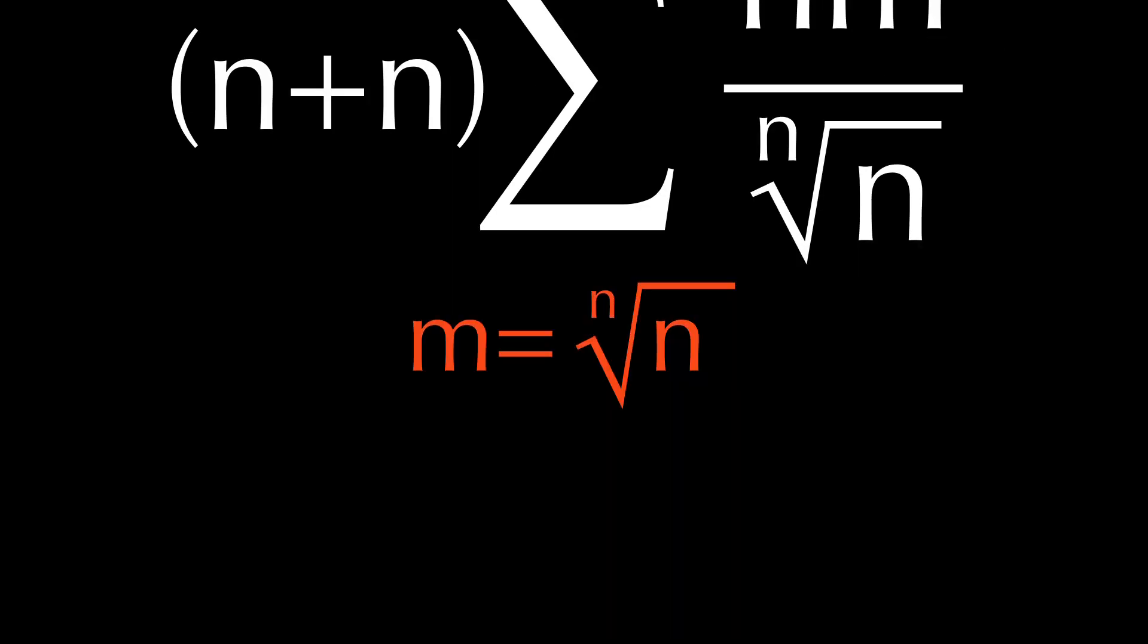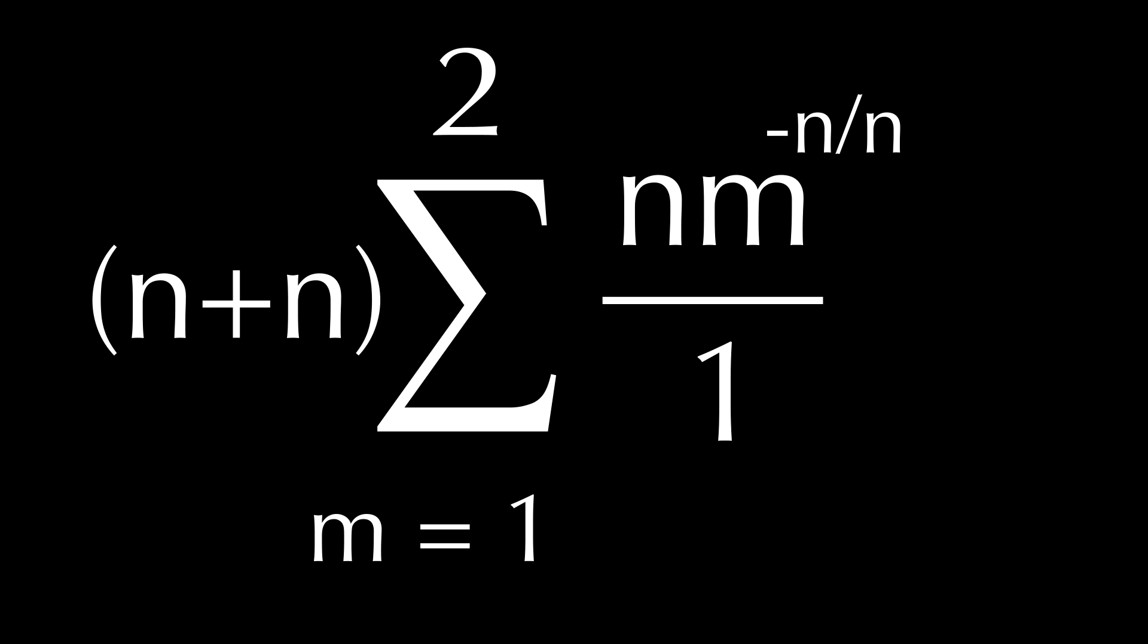But knowing that this sum has 2 as its upper index, it makes it 100 times easier. Now, for this radical here. As n moves towards infinity, this crazy thing gets reduced to 1. I know, the magic of limits is amazing.